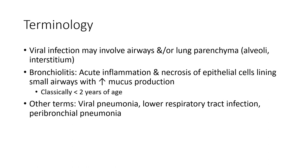Epidemiology. Viral infection may involve the airways and/or lung parenchyma, not only interstitium. Bronchiolitis is an acute inflammation and necrosis of epithelial cell lining of small airways with increased mucus production. Classically seen in less than two years of age. Other terms include viral pneumonia, lower respiratory tract infection, and viral bronchial pneumonia.